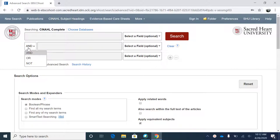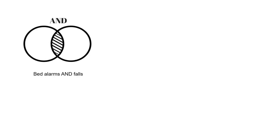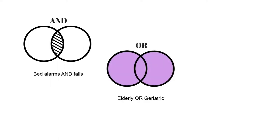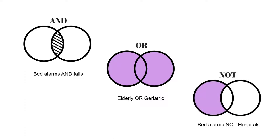The operators provide you with greater control over your search terms. With them, you can focus your searches by using AND to narrow down searches by specifying all the terms that you want to see present together in your results, using OR to broaden your searches by including similar terms or concepts, and by using NOT to narrow down searches by excluding specific terms from your search results.